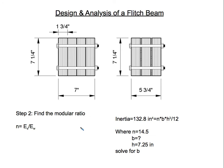To find the plate width, we first need the modular ratio, which is the Young's modulus of steel divided by the Young's modulus of wood. The Young's modulus of wood for LVLs is 2 million psi, and for steel it is 29 million psi. So the modular ratio n equals 29 over 2, which is 14.5.